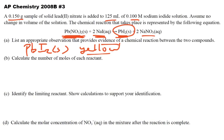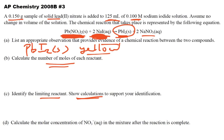Calculate the number of moles of each reactant. For one reactant you have volume times molarity; for the other you have grams, so convert grams to moles using molar mass. Then identify the limiting reactant — for every 1 mole of lead nitrate you need 2 moles of sodium iodide. Figure out which one runs out first. Show your calculations: if I have this many moles of lead nitrate, how many moles of sodium iodide do I need — do I have more or fewer than needed?